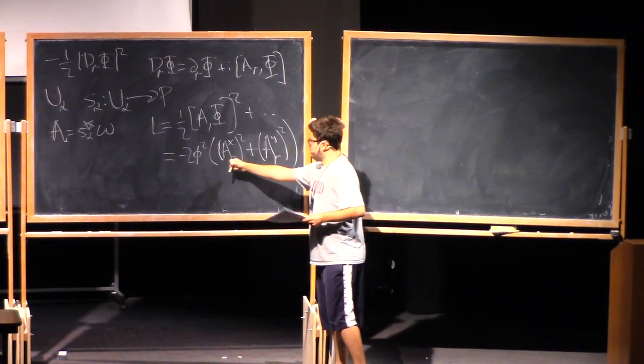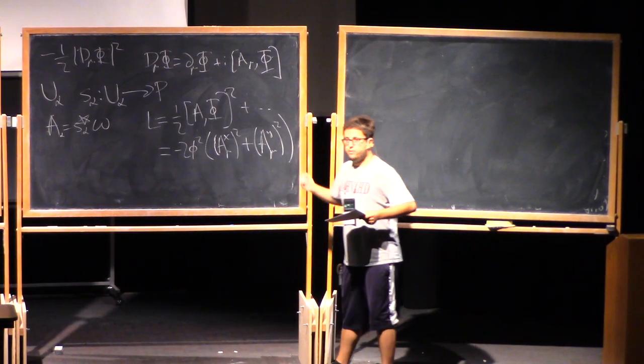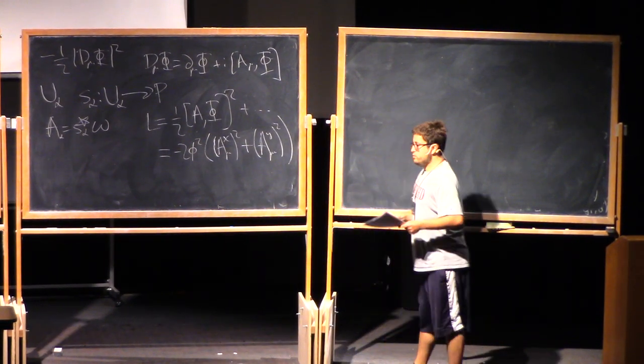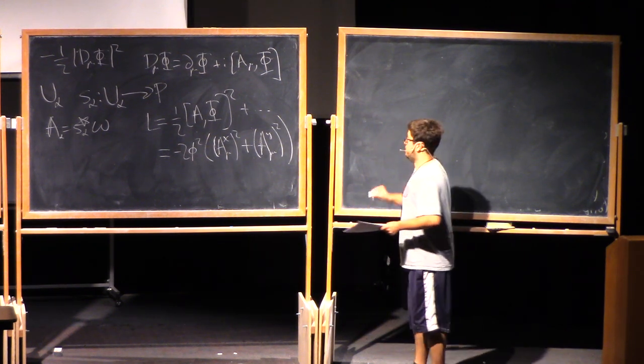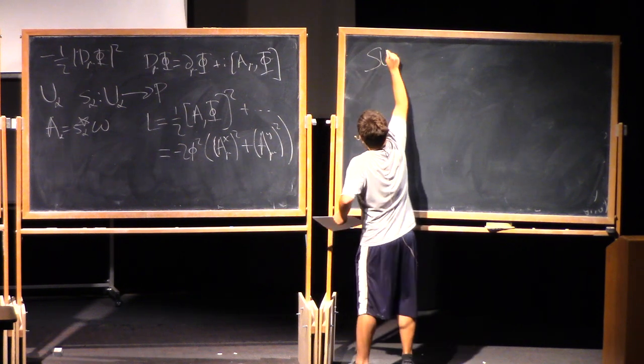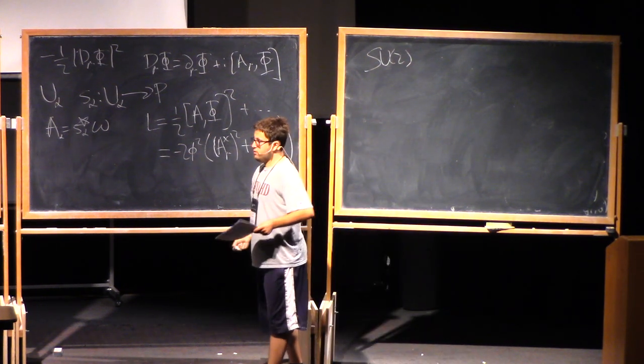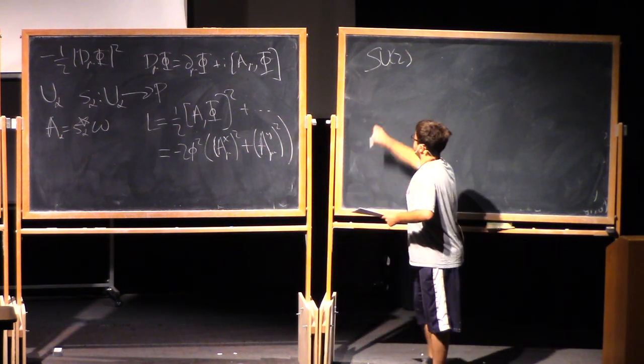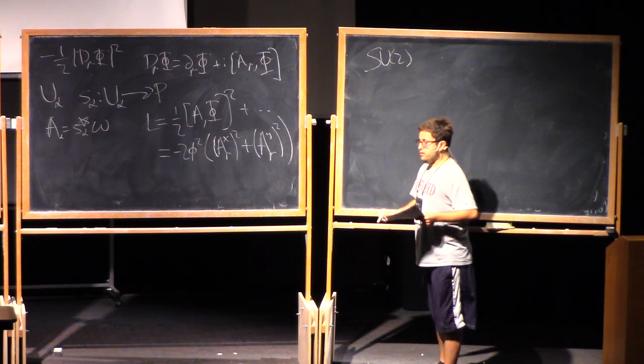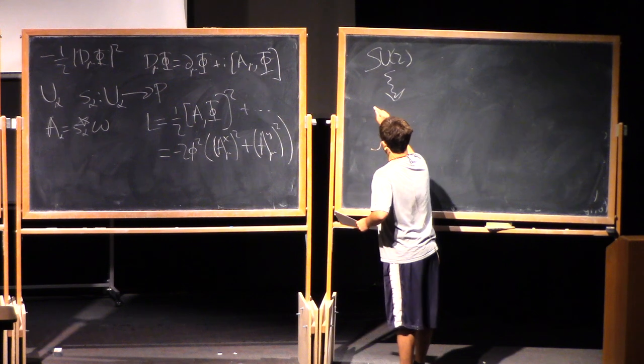So what does this mean? We started off with three gauge fields, with three of these gauge fields, A x, A y, and A z, and now we only have one. So we say that we've spontaneously broken the SU2 gauge symmetry down to U1. So at high energies, where we're able to explore the whole configuration space of our field theory, we have some SU2 gauge theory. But at low energies, where this phi takes some value, I end up with some effective U1 gauge theory.